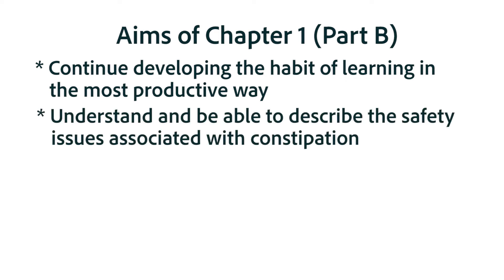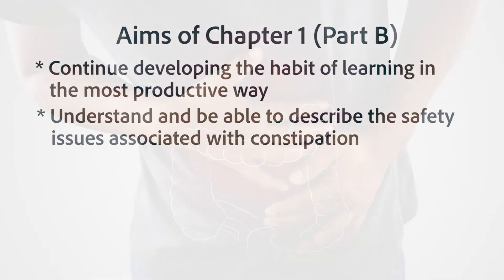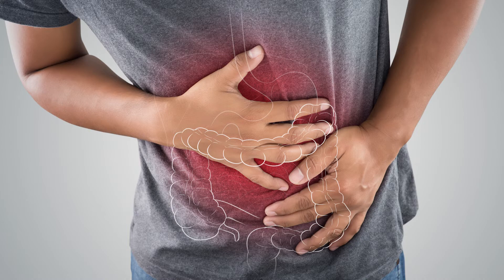Another one of our aims of this portion of the chapter includes to identify any potential safety issues associated with the presenting complaint of constipation, and to make sure to attempt to determine if those problems exist before we recommend anything at all. For instance, how would you know if a person who is constipated actually has a gastrointestinal tract blockage, in which a laxative would actually be contraindicated because it could result in serious harm to the person.